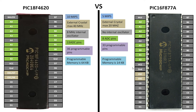The PIC16F877A has very impressive programming memory for its price — at only $2.50, 14 KB is huge. For comparison, the ATmega328P used on the Arduino UNO has only 8 KB of built-in programming memory. The PIC18F4620 is a masterpiece in this scenario, with a very large programmable memory of 64 KB. This makes it very suitable for complicated programs where you need a large number of libraries.